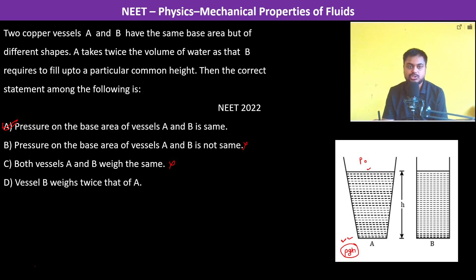Vessel B weighs twice that of A. A takes twice the volume of water. So how can B weigh twice? We cannot tell about this. But yes, the A part is very clear.